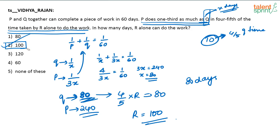Understanding that part is the problem. Basically, what they are trying to say is: if Q is able to do a work in some number of days, in those days P would have done only 1/3 of the work, and that number of days that Q takes to complete the work refers to 4/5 of the time taken by R alone to do the work. So if you understand it that way, you will get the answer as 100. It's a bit tricky, but this is the right approach. Going by options won't work well here. The efficiency ratio of P and Q — P will do 1/3 as much as Q.